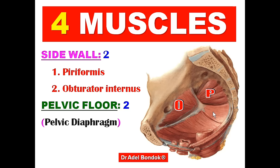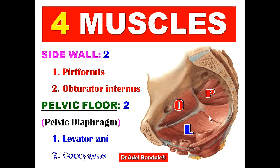Two muscles close the pelvic outlet, forming the pelvic diaphragm: levator ani and the coccygeus muscle. So the four muscles are: piriformis and obturator internus on the side wall, and levator ani and coccygeus in the pelvic floor, forming the pelvic diaphragm.